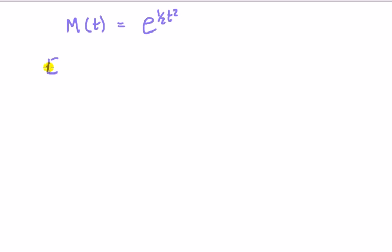The first moment, E(x), we know is the first derivative of M with respect to t. How can we differentiate this thing?